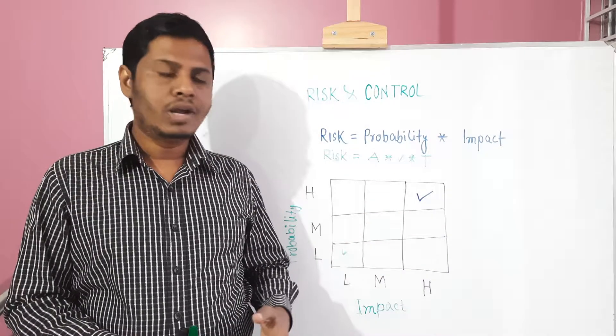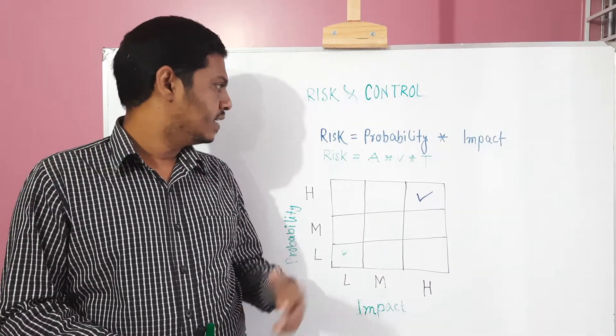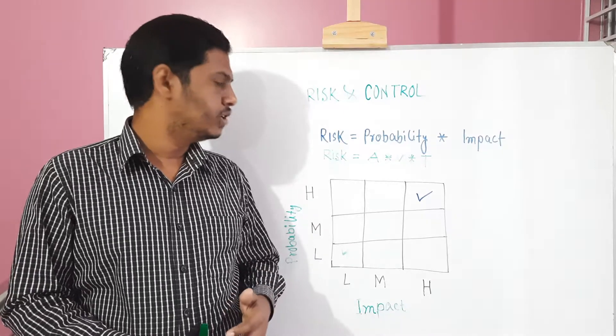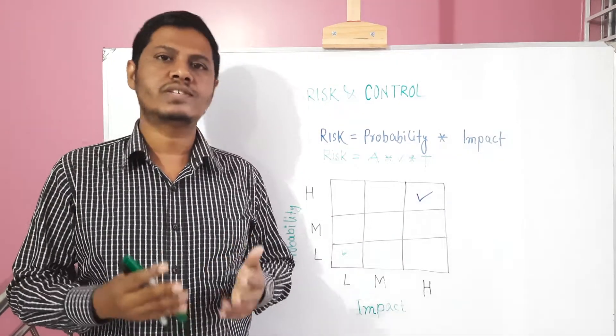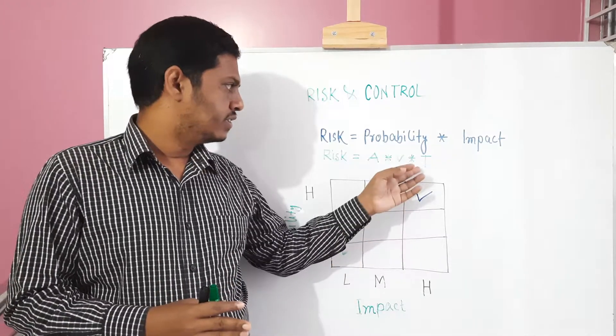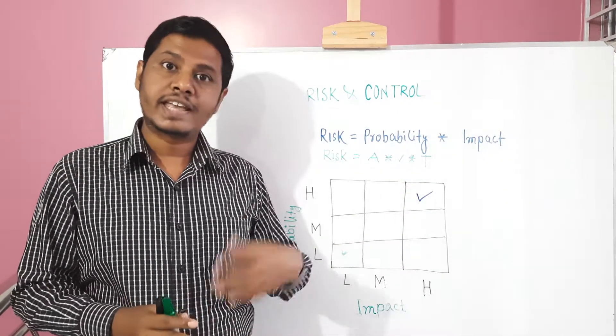Another formula of risk is risk equals asset value times vulnerability times threat. What is vulnerability? Actually, vulnerability is the weakness of a system and threat is an element that exploits the vulnerability.